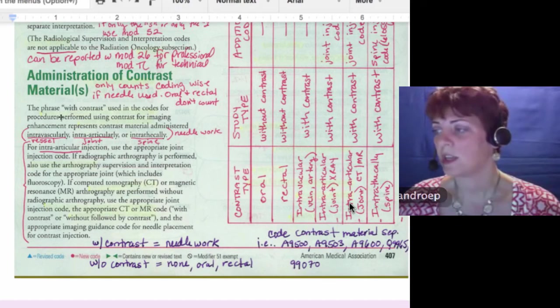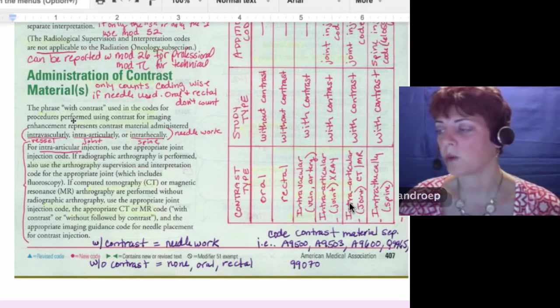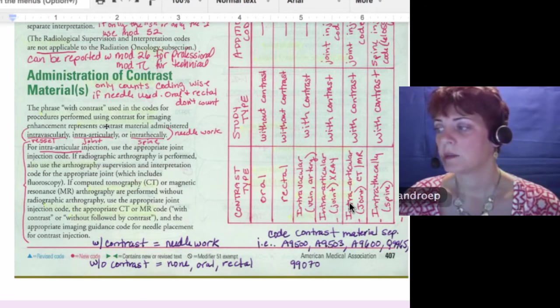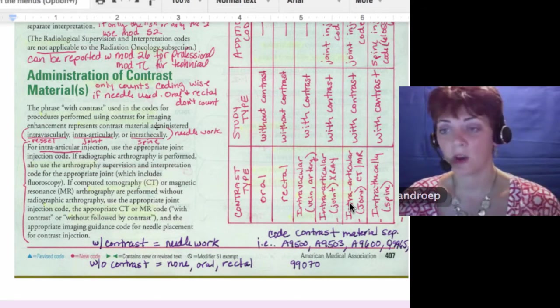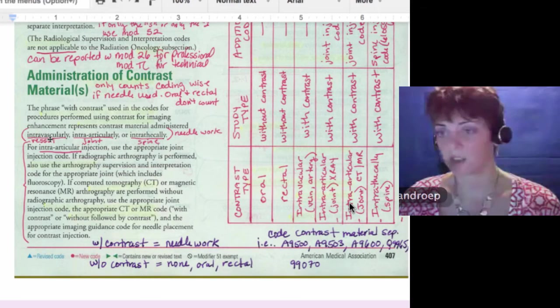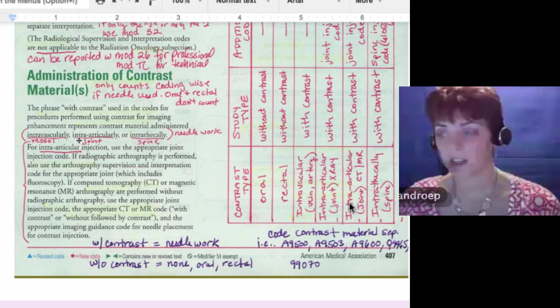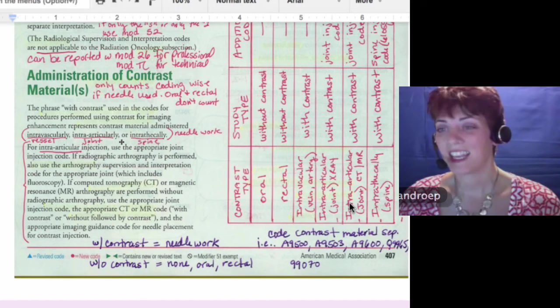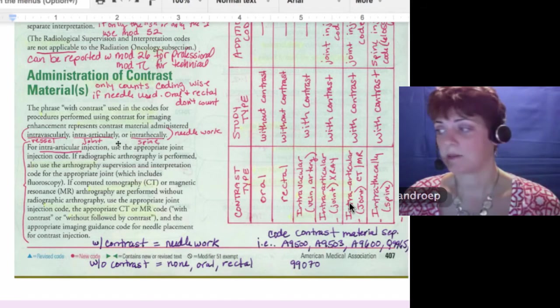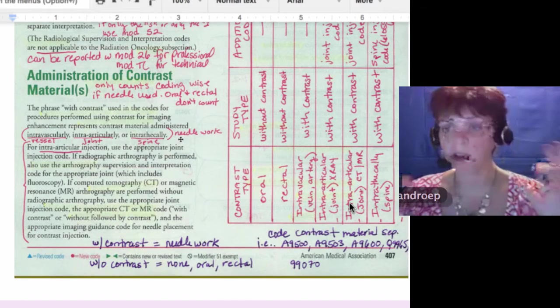So it says, the phrase with contrast used in the codes for procedures performed using contrast markers for imaging enhancement represents contrast material administered. These are the only ways. Intra-vascularly, so that's going into a vessel. Intra-articularly, that's going into a joint. Or intrathecally, that's going into the spine. These are what I affectionately call needlework.